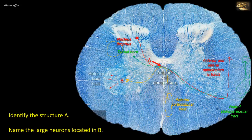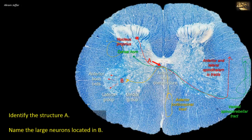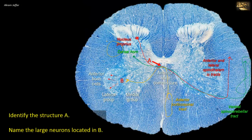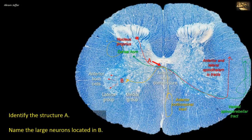B represents the anterior horn cells, also called alpha motor neurons or ventral horn motor neurons. They are found at all levels of the cord, but the number and arrangement of motor neuronal groups vary depending on the level. In the lumbosacral region, these large alpha motor neurons are aggregated into medial and lateral nuclear groups. In the thoracic region, only the medial group is found. The large numbers in the cervical and lumbosacral enlargements reflect the extensive motor innervation required for the upper and lower limbs respectively.